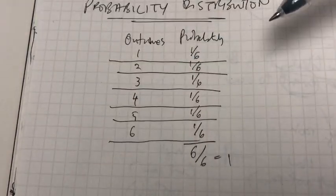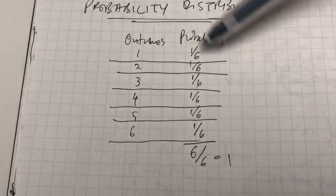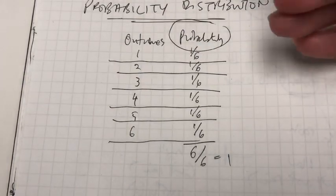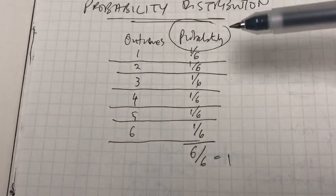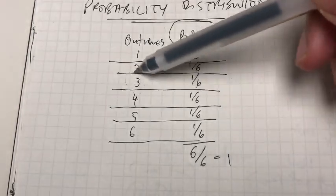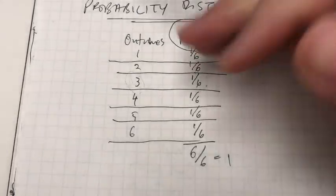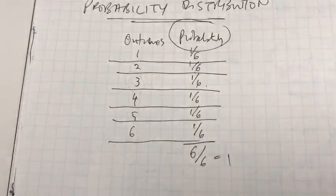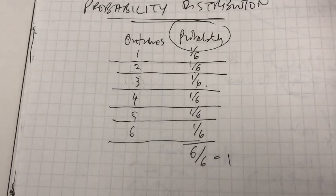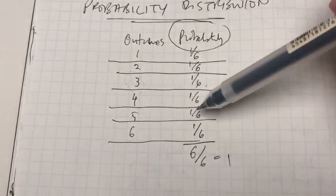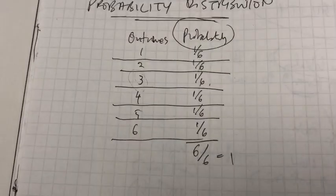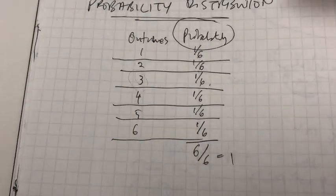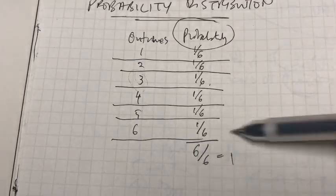From this probability distribution, we can see some major characteristics. Number one, the probability of a particular outcome ranges between zero and one. Probability means what is the likelihood of it happening before it has happened. So the probability of getting a three, for instance, is one out of six. Once you throw the dice and you get a three, it becomes a one because it actually happened, and the rest would be zero. Whenever you add the probabilities, it will come back to one.